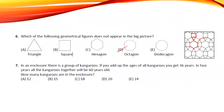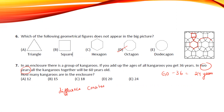In an enclosure there is a group of kangaroos. If you add up the ages of all kangaroos you get 36 years. After two years the total is 60. The difference is 60 minus 36, which is 24 years. By the constant difference method, we divide 24 by 2, giving 12 kangaroos in the enclosure.